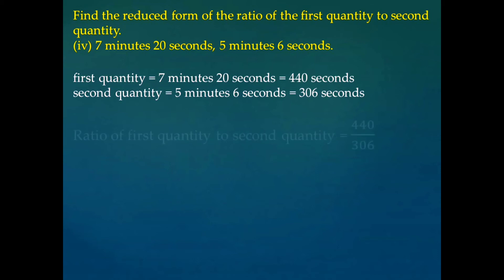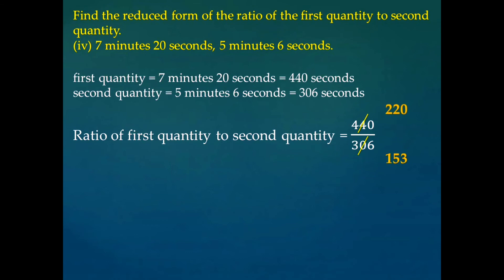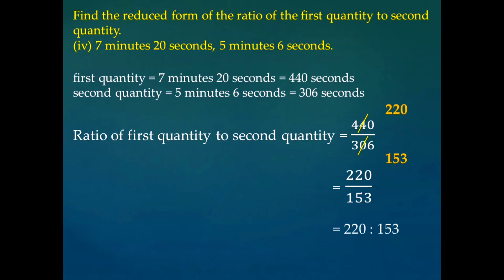Now both of these quantities are in the same unit, so we can find the ratio. The ratio of first quantity to the second quantity is equal to 440 divided by 306. If we simplify it, we will get 220 divided by 153. So the ratio of these two quantities is 220 is to 153.